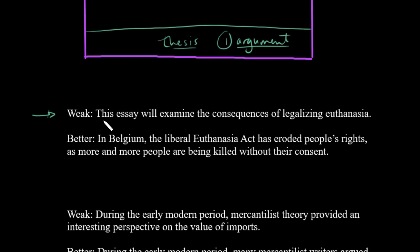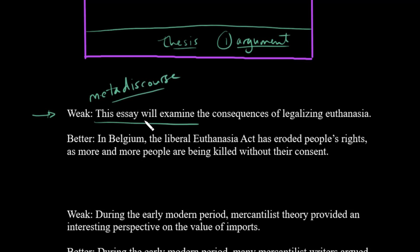Another thing to watch out for is what's sometimes called metadiscourse — the kind of language we use to talk about the process of reading and writing. You don't necessarily need to say 'this essay will examine' or 'I will argue.' Often you can do without those phrases. They're not necessarily forbidden, but often they're ones you can avoid. The better version avoids metadiscourse and is actually making a case.